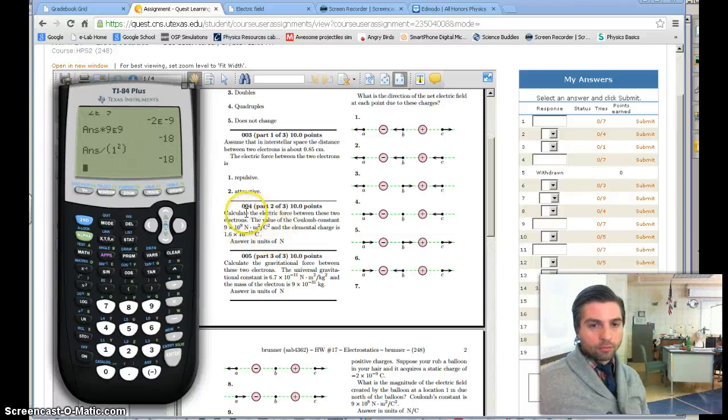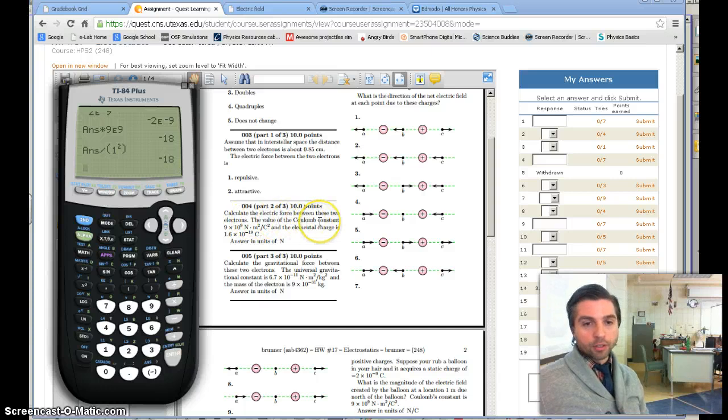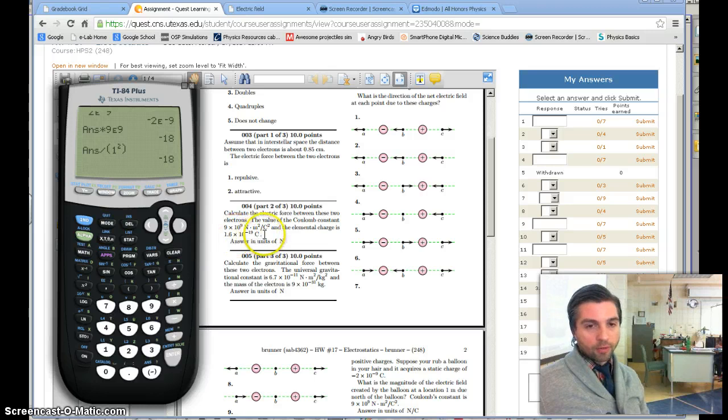Scientific Notation in Quest. Calculate the electric force between these two electrons. The value of the Coulomb constant is 9 times 10 to the 9, and the elemental charge is that of an electron.